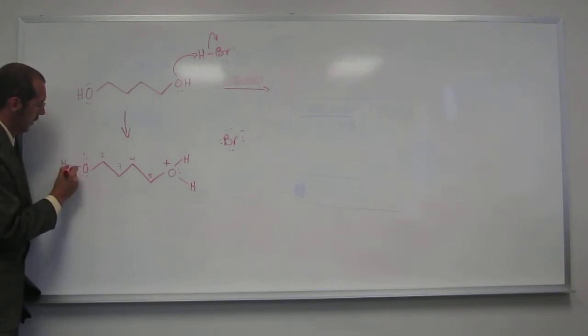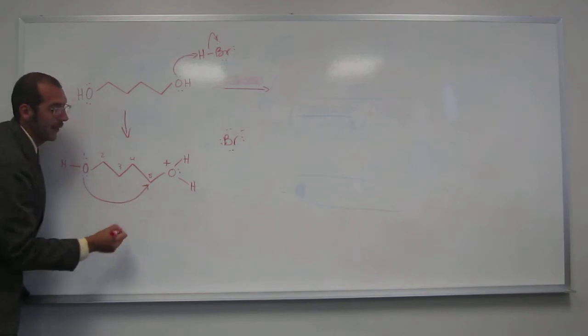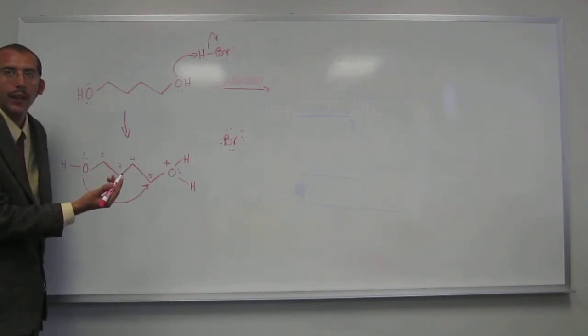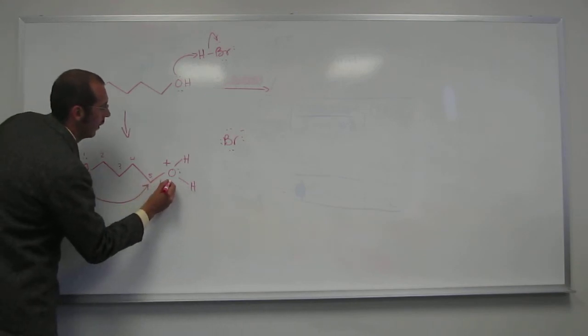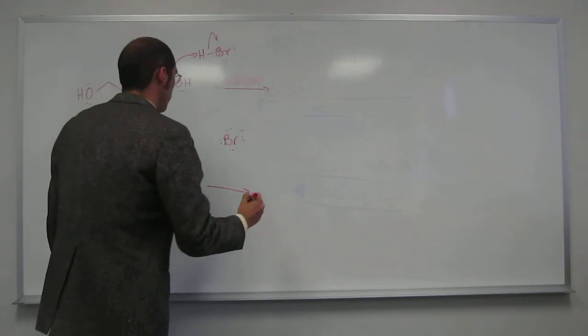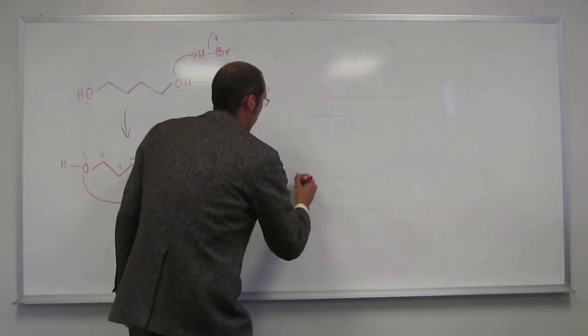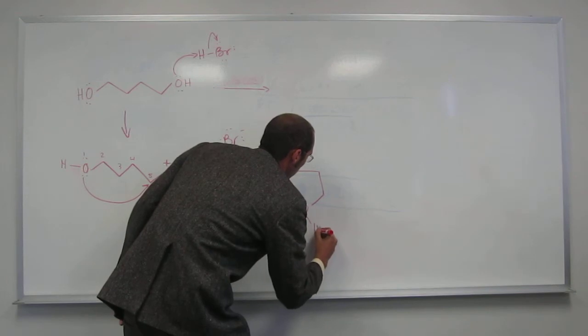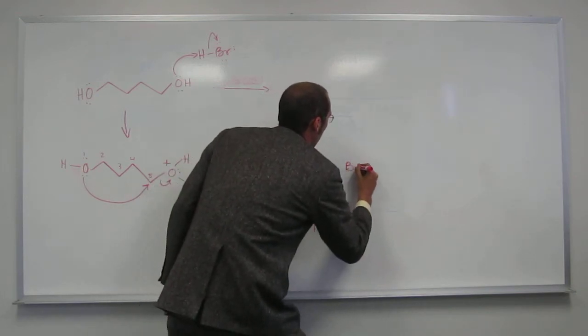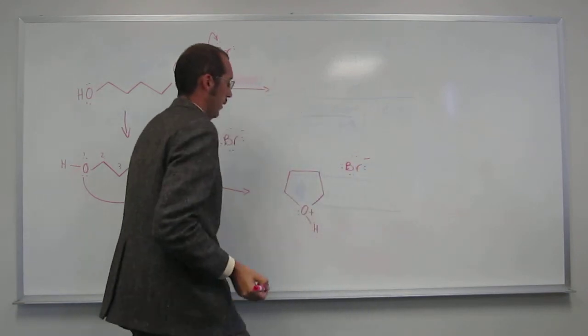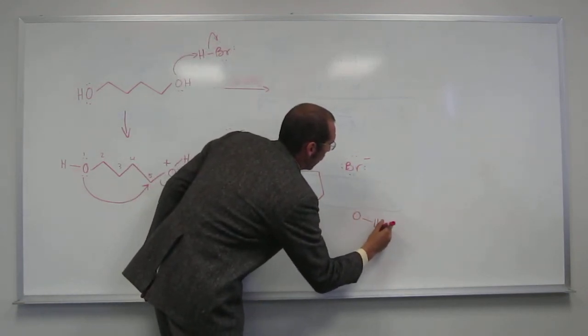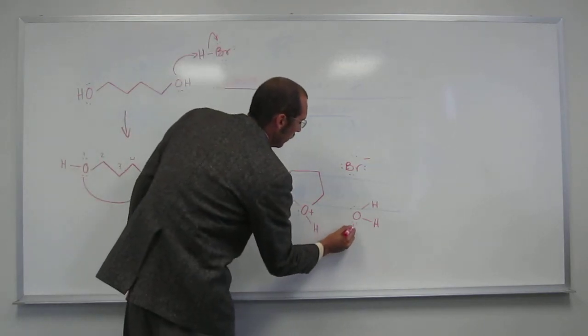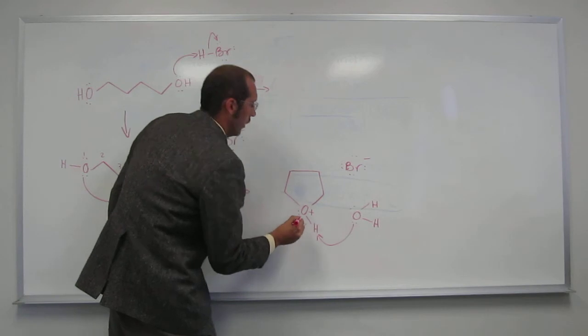So what will happen, let's just do this, attack that. Notice this leaving group isn't going to leave by itself because if we did that, it would make a primary carbocation. So this has to be an SN2 reaction. Like that. There's our leaving group. And what's going to happen now? It's going to deprotonate there.